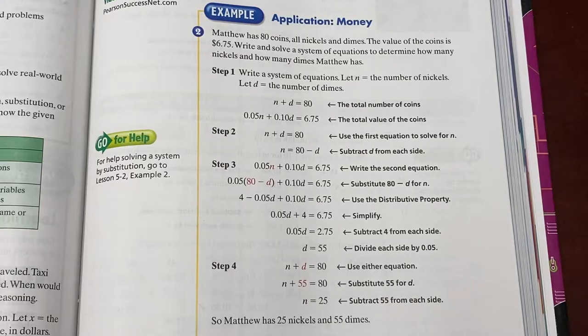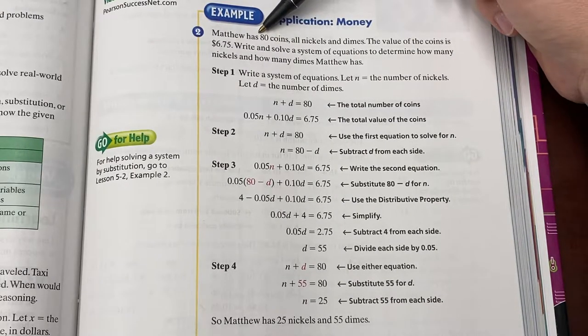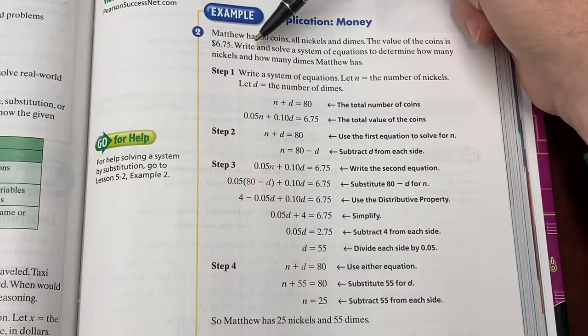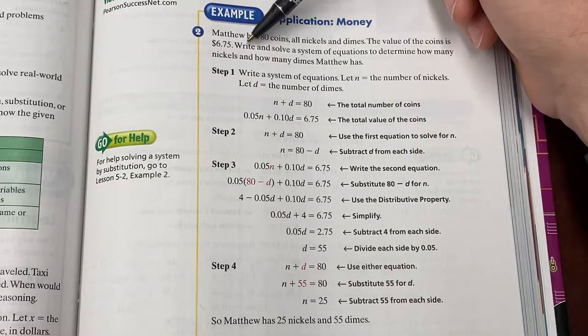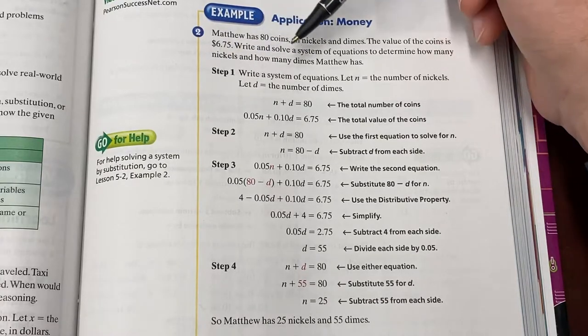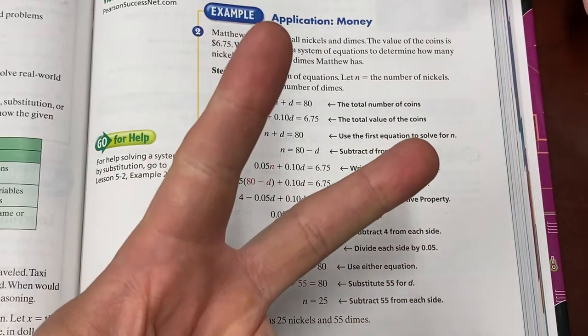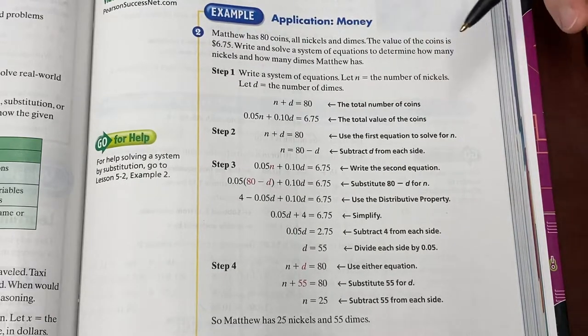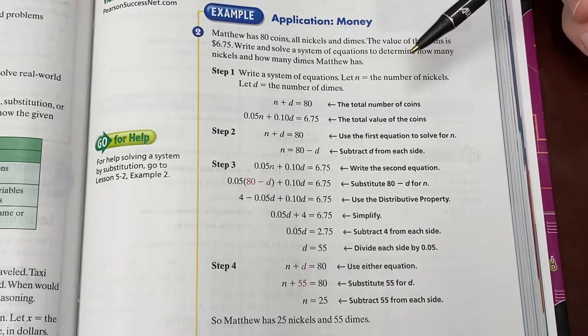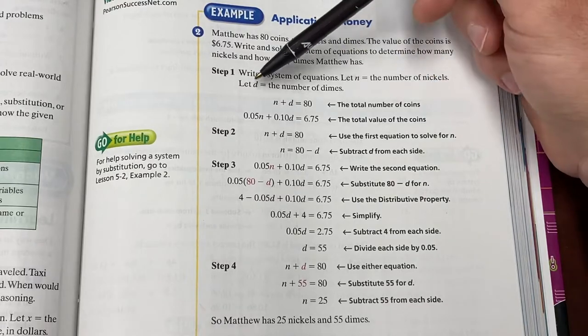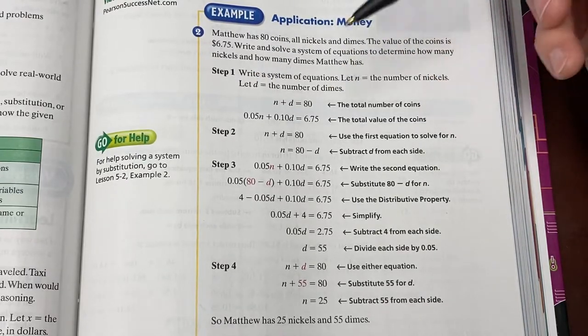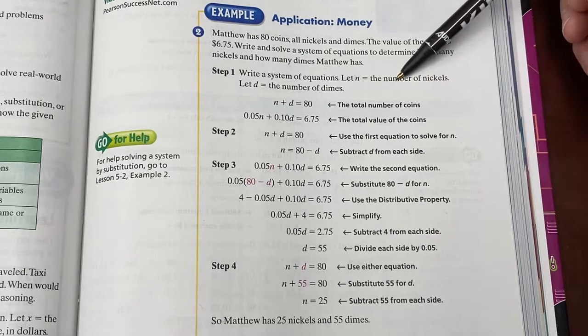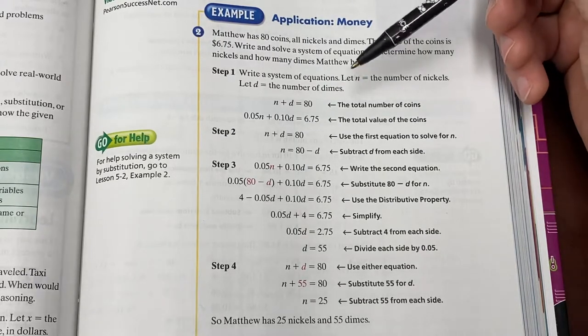So here is example two. Let's read. Matthew has 80 coins. So they're telling you he's got 80 coins and he only has two types of coins, nickels and dimes. The value of the coins is 675. Write and solve a system of equations to determine how many each he has. So there's two pieces of information they gave you. He's got 80 total and he's got $6.75 total. 80 coins, 675. You need your let statement. What are the two things you don't know here? Well, that's pretty obvious. You don't know how many nickels Matthew has and you don't know how many dimes he has. Always start your word problems with the let statement. Let N equal number of nickels and let D equal number of coins. Not value of nickels, but how many of them he has.